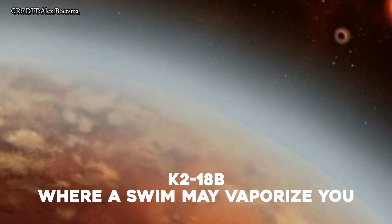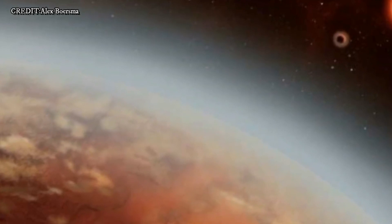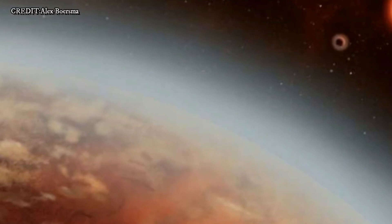K218b – Where a swim may vaporize you. K218b, twice the radius and eight times the mass of Earth, has been a top contender for an Earth-like planet for years.